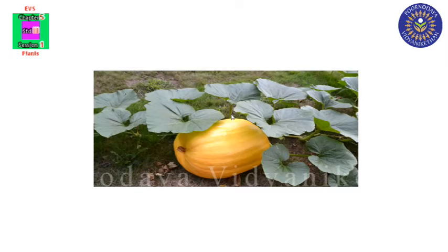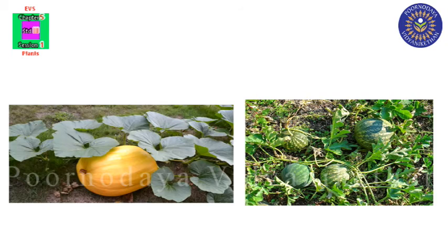Creepers also have weak stem and large fruit. The fruit is very large and the stem is very weak, so it cannot support the weight of the fruit and grows along the ground. The plants that grow along the ground are called creepers. Examples: pumpkin, watermelon.